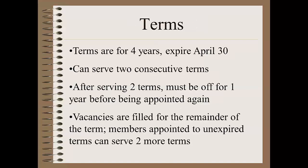Moving on to terms of board members. All terms are for four years and all expire on April 30th. Members can be appointed to two consecutive terms. After serving two terms, they must go off the board for at least one year, but after that they can be appointed again. When there are vacancies, the person appointed to fill the vacancy can serve out the remainder of that term and then is eligible for two full terms of their own. A board with seven members will have three years where two terms expire and then one year where there's only one term that does, and that four-year cycle will keep going on forever.